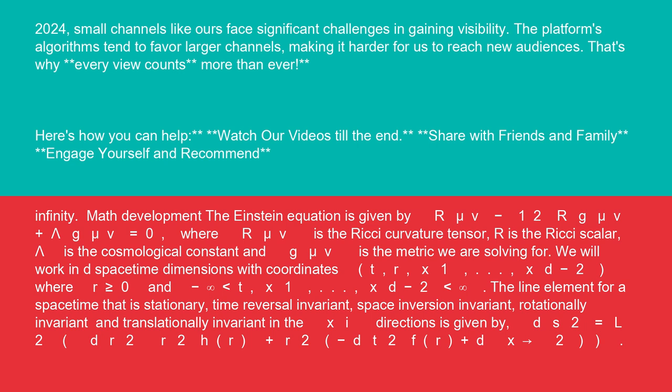Math development: the Einstein equation is given by R_μν - 1/2 R g_μν + Λ g_μν = 0,